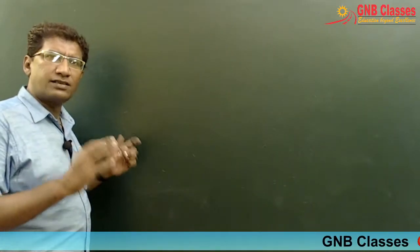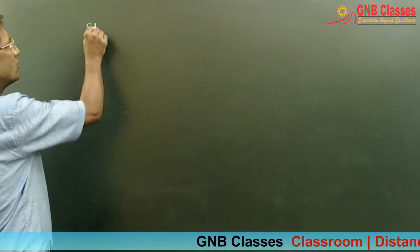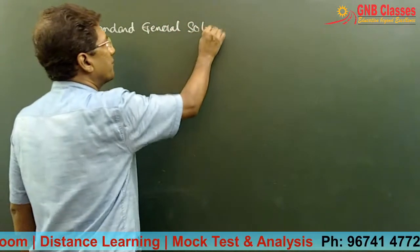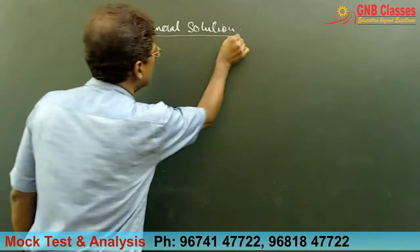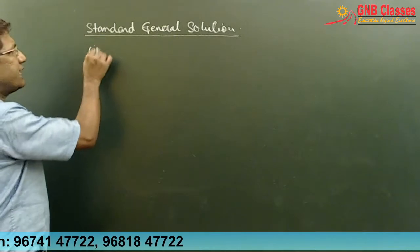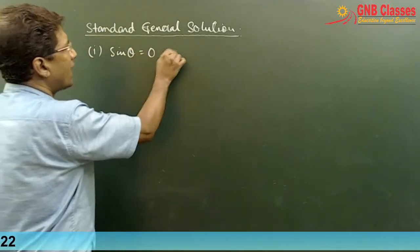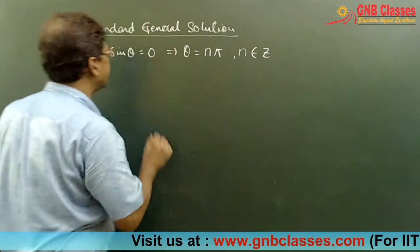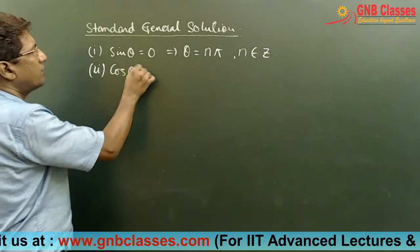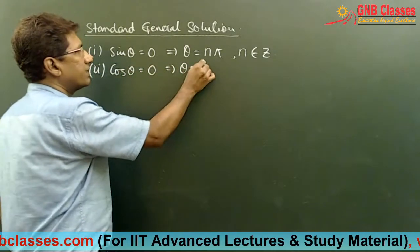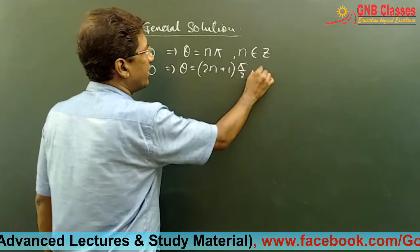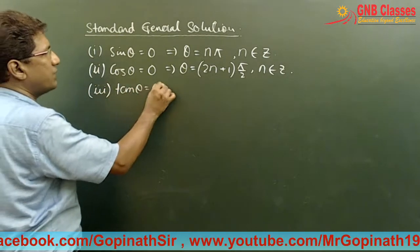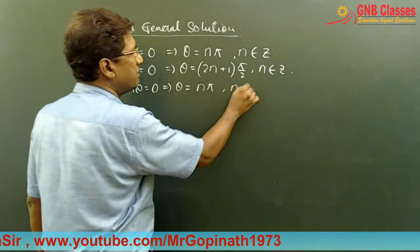Now there is some standard general solution. Let me just write it down. Students, make a note of this. The first one is: if sin θ = 0, then θ = nπ where n belongs to integers. If cos θ = 0, you get θ = (2n+1)π/2, again n belongs to integers. The third one is: if tan θ = 0, then θ = nπ where n belongs to integers.